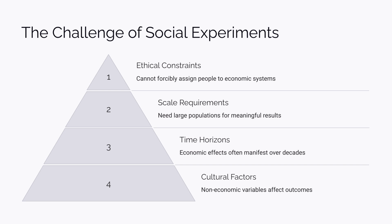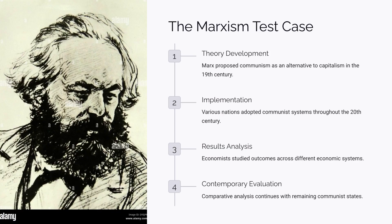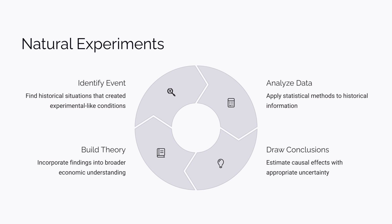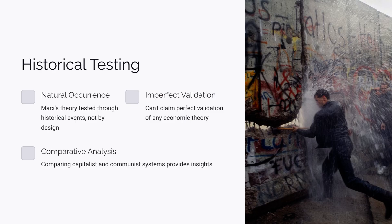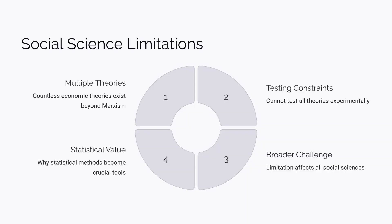How would you conduct a social experiment in economics? The most famous example is Marxism. Based on Marx's ideas, socialism and communism were implemented. While the theory sounds plausible, we can't know for certain if it's correct. Historically, communism has proven difficult to implement, but at the time, no one knew how it would turn out. In economics, experiments are impossible — you'd have to divide people into groups by force. Marx's theory was historically tested, but not by design. This is a limitation not just of economics, but of all social sciences. That's why statistical methods are so valuable.